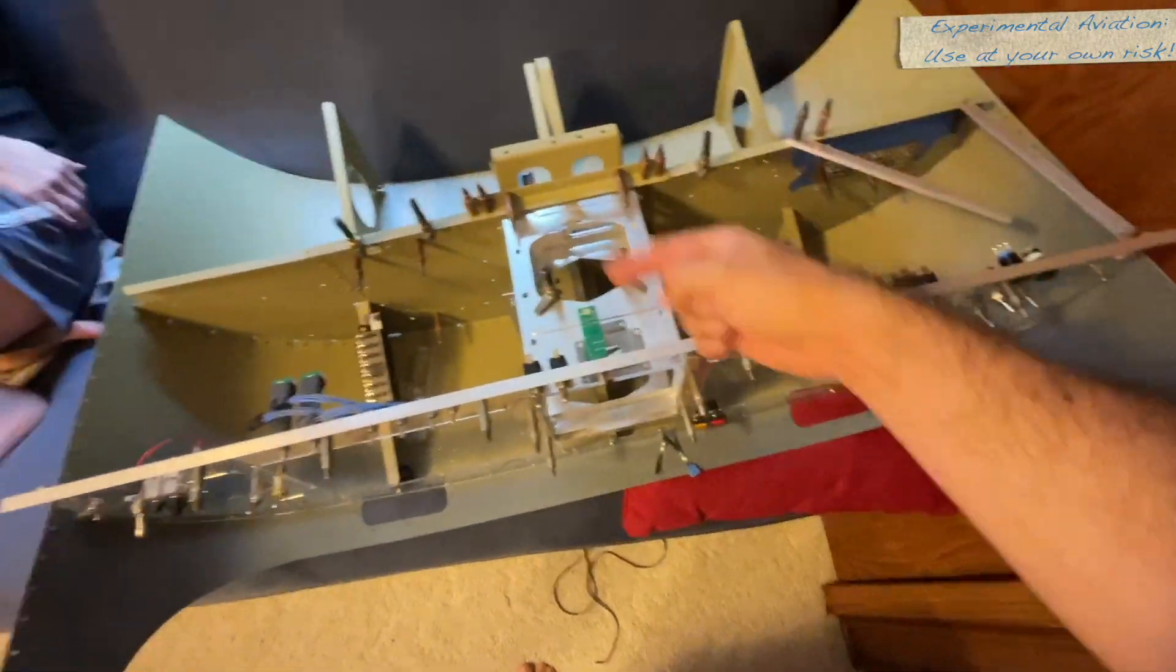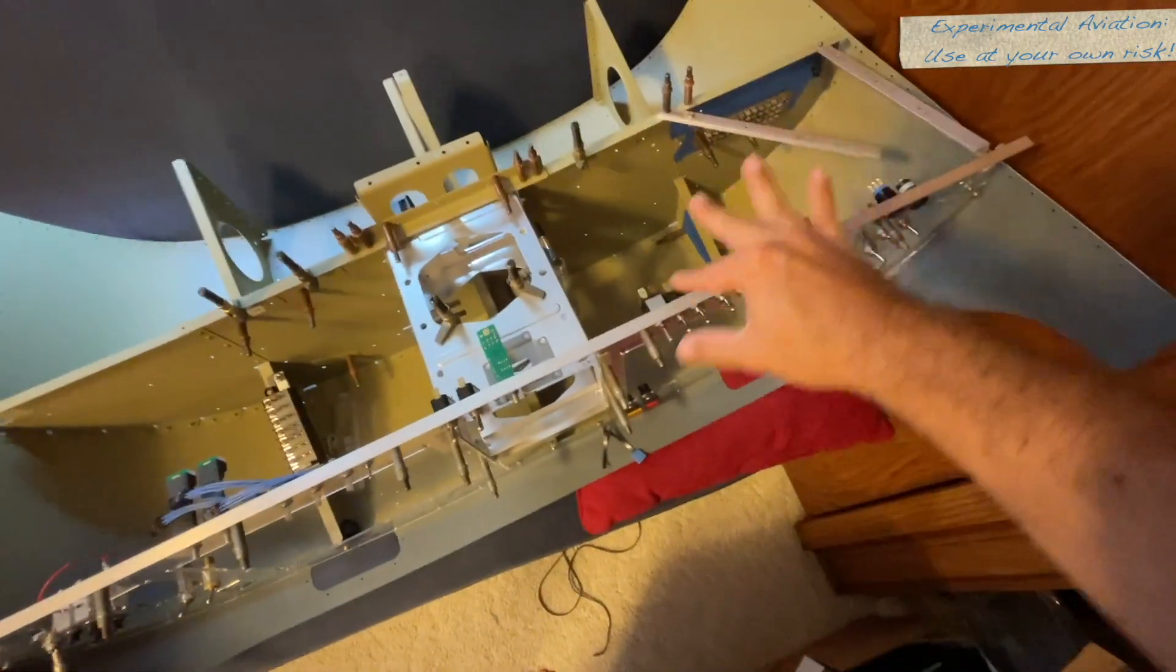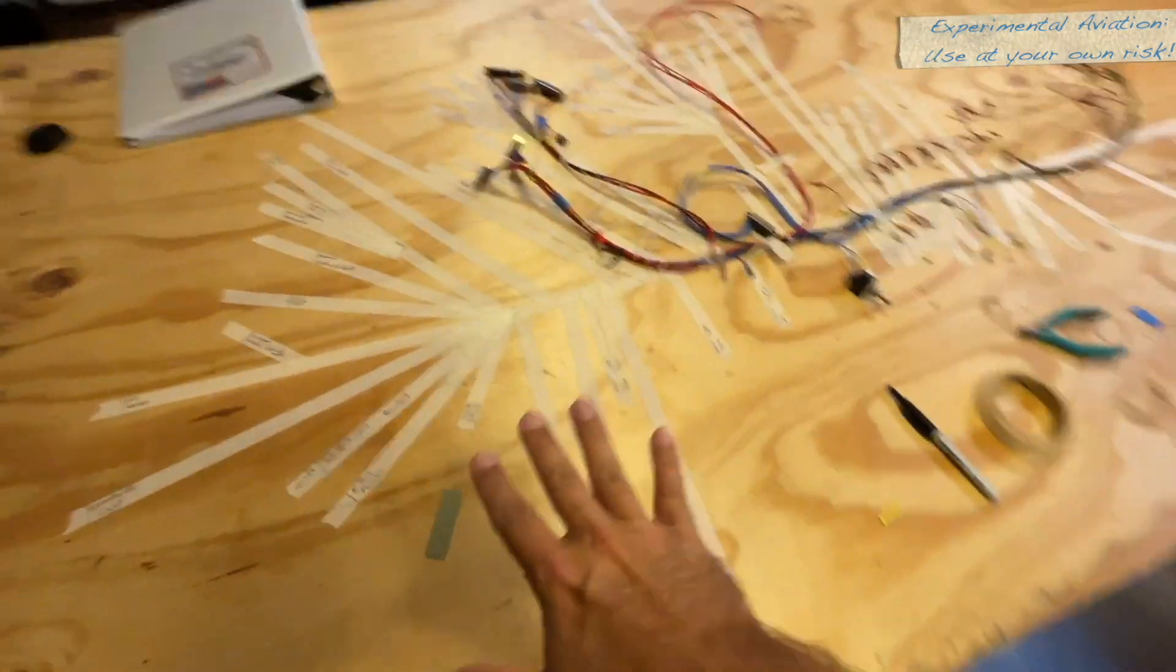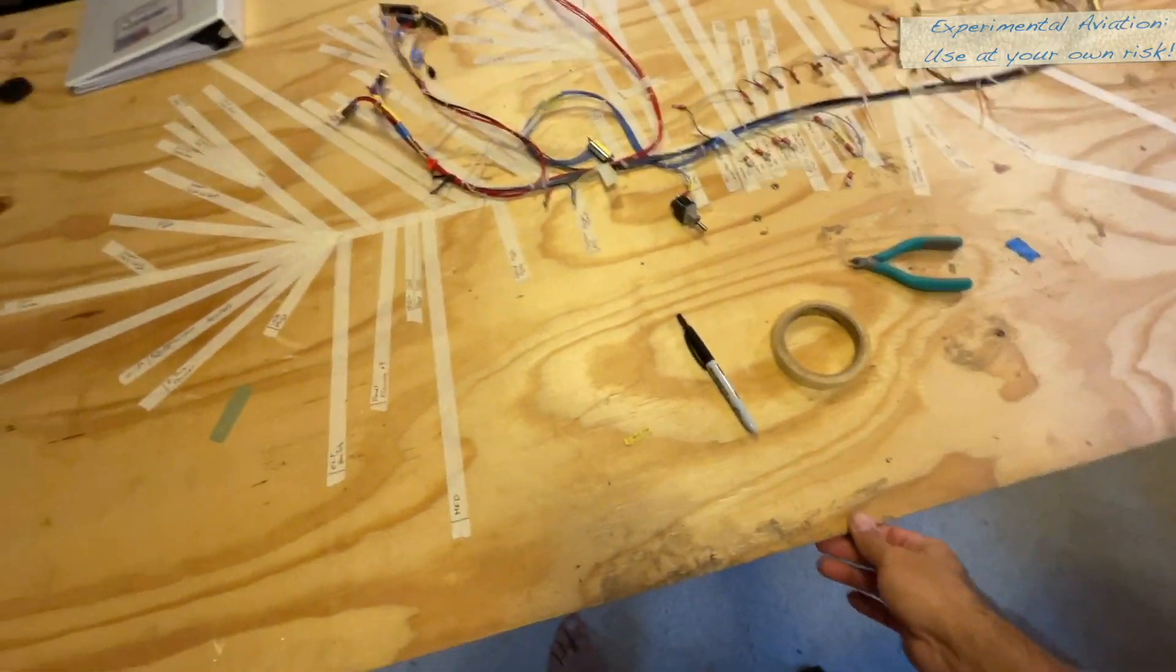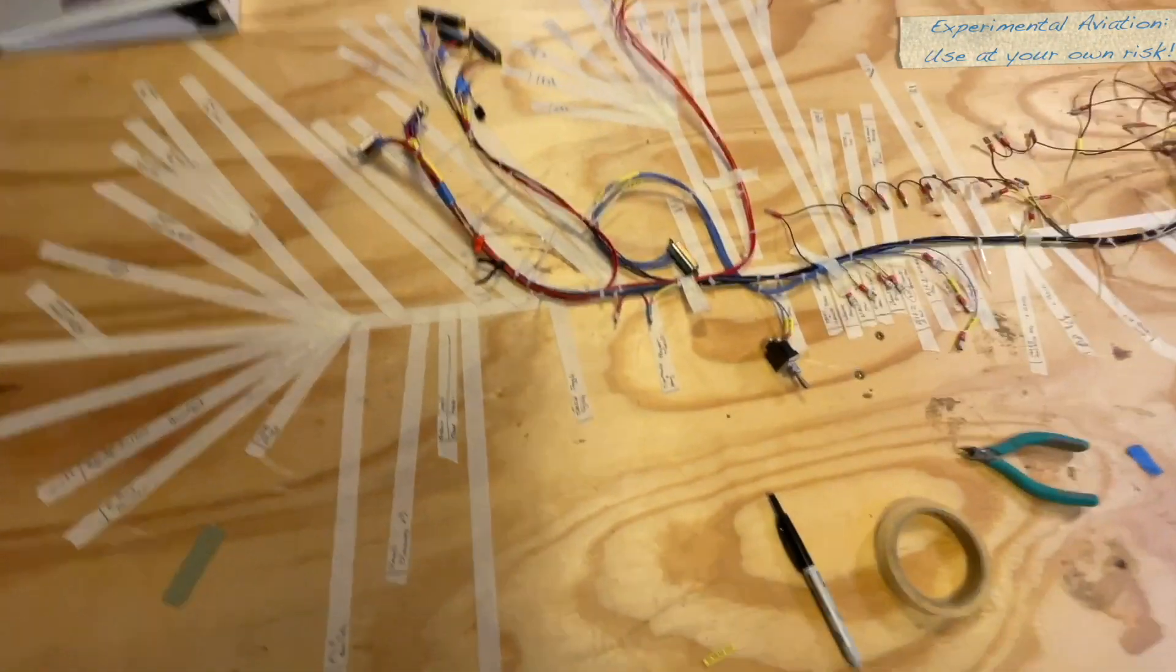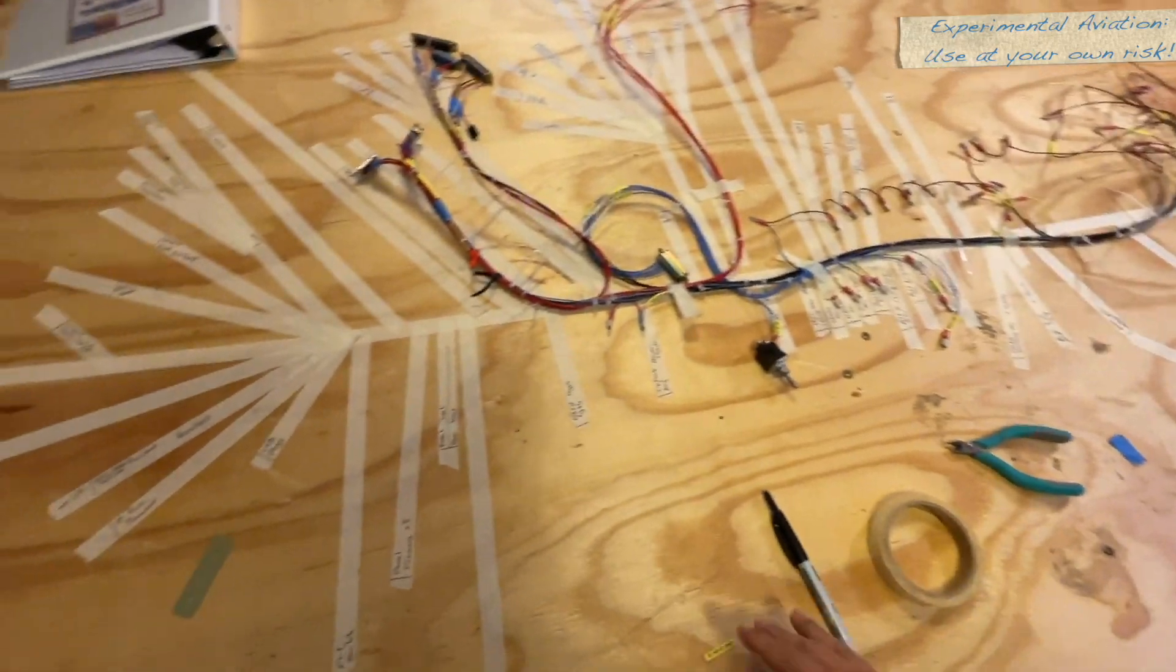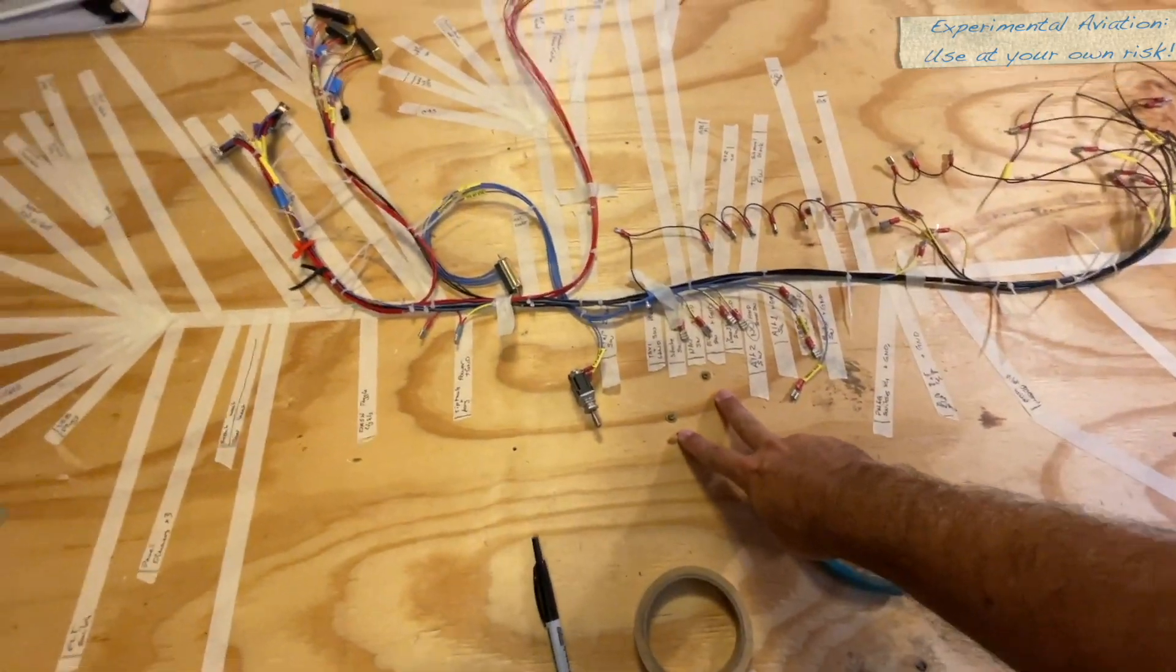To figure out the lengths and where things are going, we've removed that from there and I've laid it out on this four by eight sheet of I think half inch plywood, just something sturdy that's on top of the table.